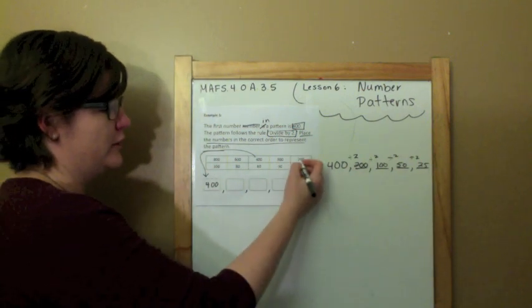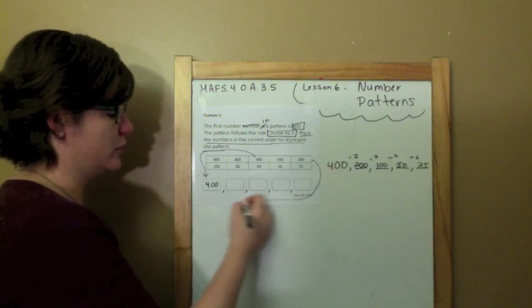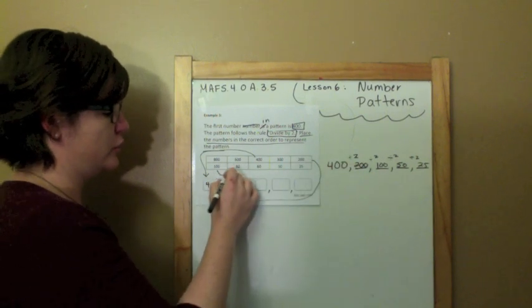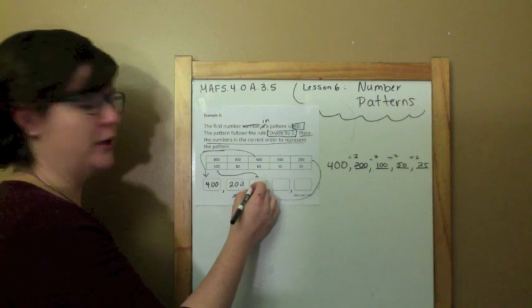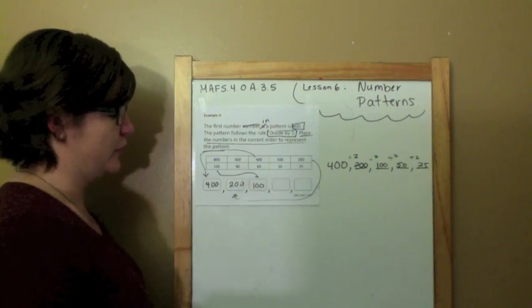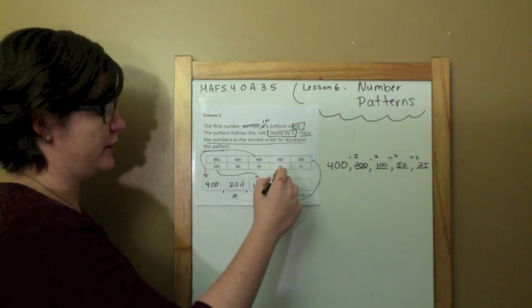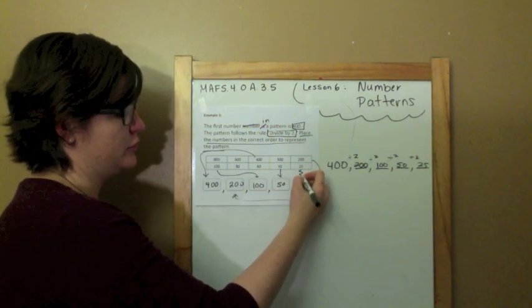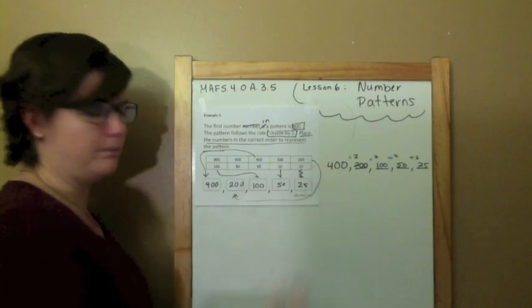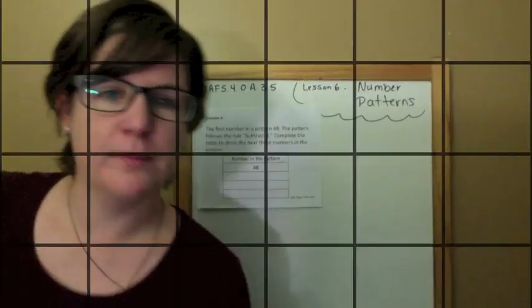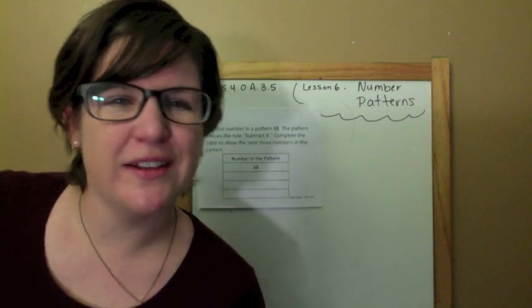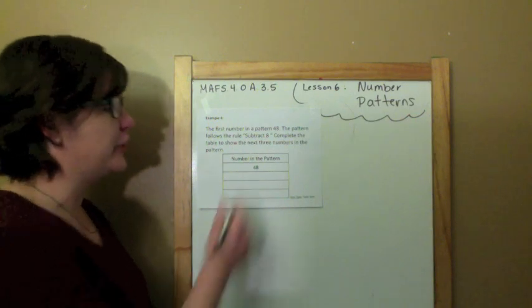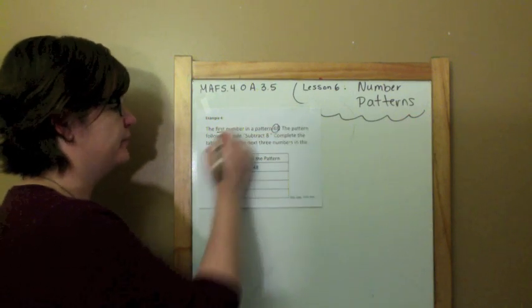So, I just need to take these numbers and plug them in. So, 200, there's 200. 100. 50, that one's easy. 25 and that's your answer.